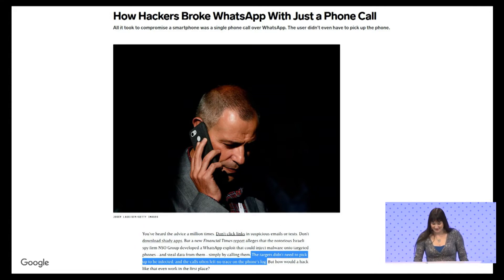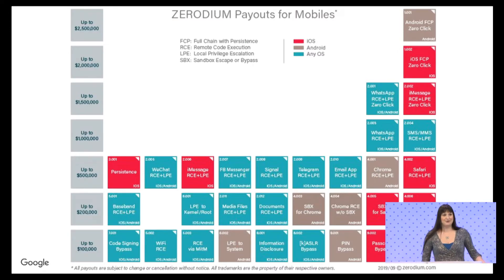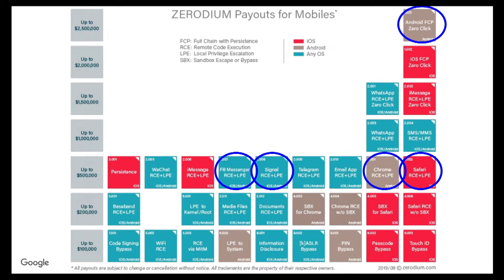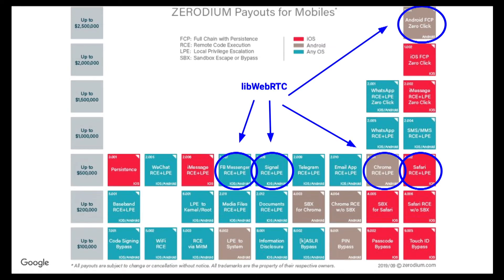You might think this is a one-time thing, but it's not. This is the price list from a company called Zerodium, which buys vulnerabilities from whoever and sells them to whoever. You can see that the WhatsApp vulnerability would have gone for $1.5 million on Zerodium — so you can imagine what someone might do with a vulnerability they paid $1.5 million for. Interestingly, other targets listed include Facebook Messenger, Signal, Chrome, Safari, and Android remote vulnerabilities. What do these all have in common? They use WebRTC. So it's fairly likely that attackers are using WebRTC to attack some of these very valuable targets.